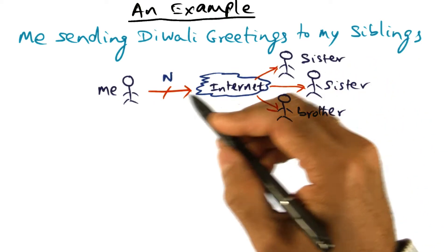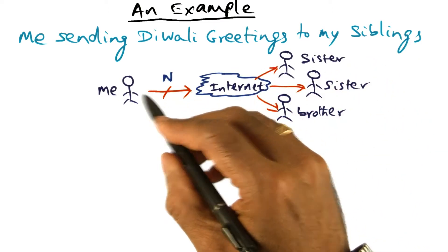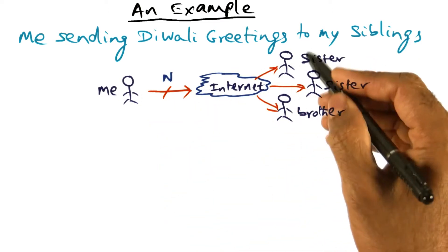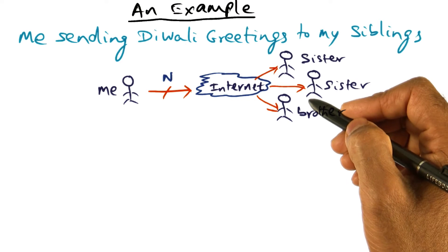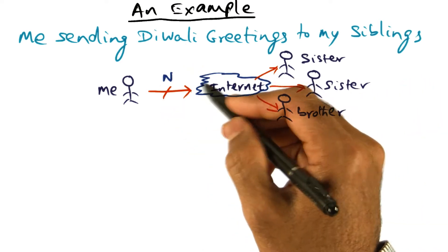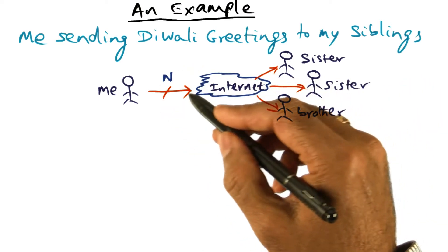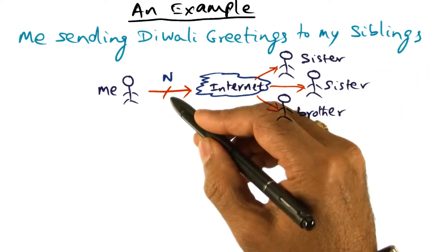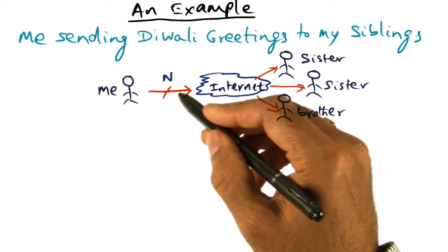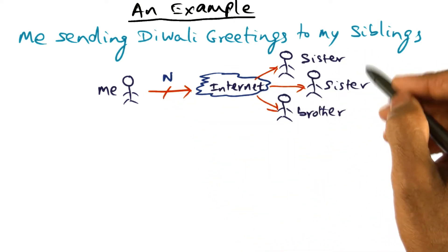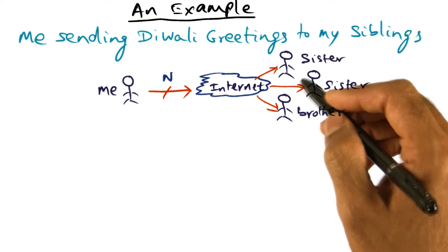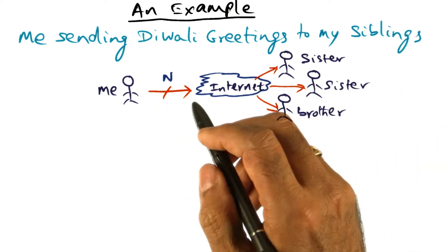What I can do is I can send individually a greeting message to each of my siblings, and so there'll be N messages going out on the internet from source to destination. So I send out N messages to reach N of my siblings. That's one way of doing it.